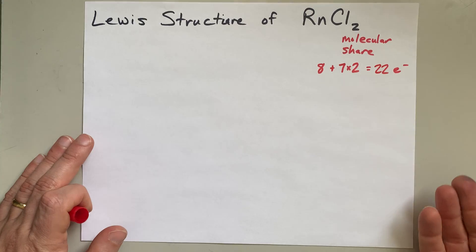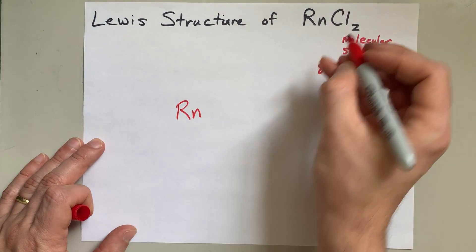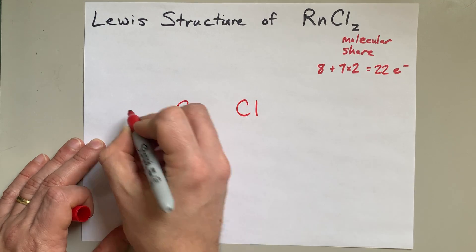Now, the way I draw molecular Lewis structures is to put my central atom in the center and the outer atoms on the outside of that.